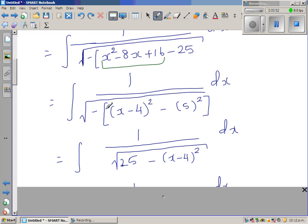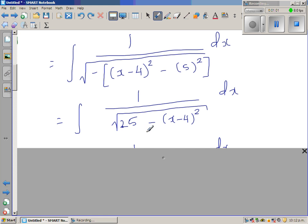Now I want to remove this negative. So I swap this over so that is nothing but 25 minus x minus 4 the whole squared. So the negative will be cancelled.